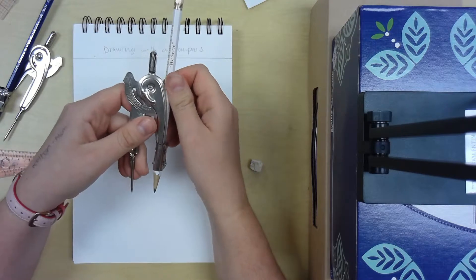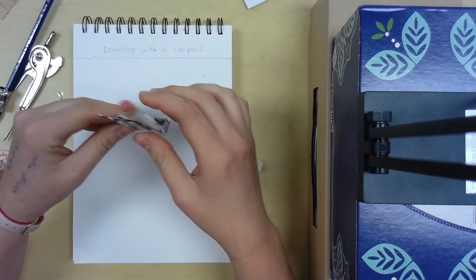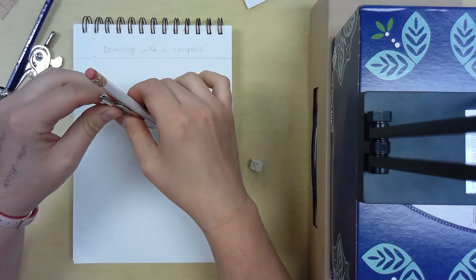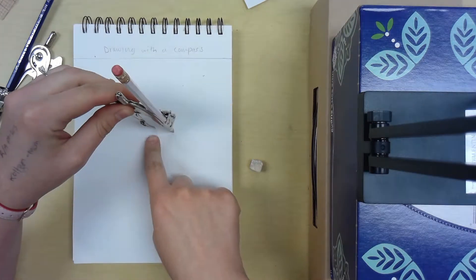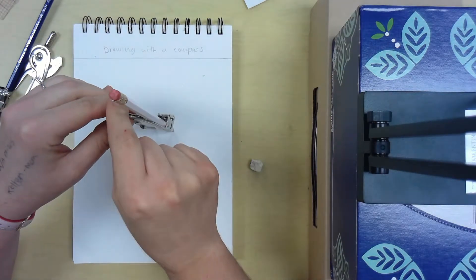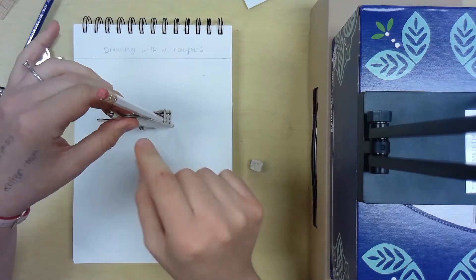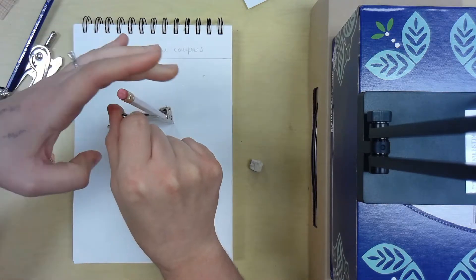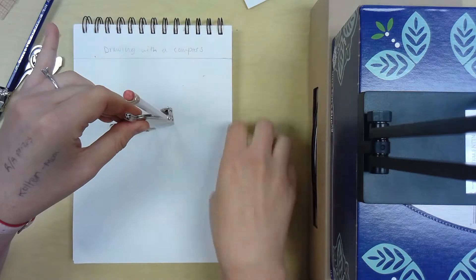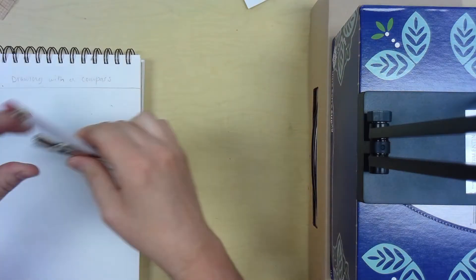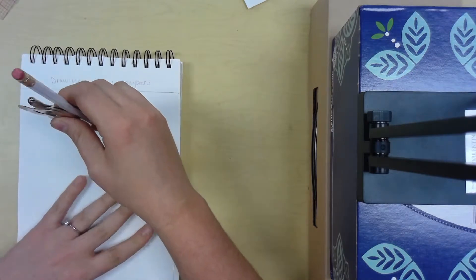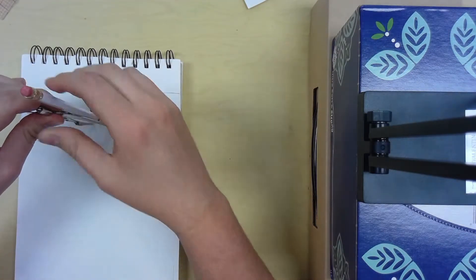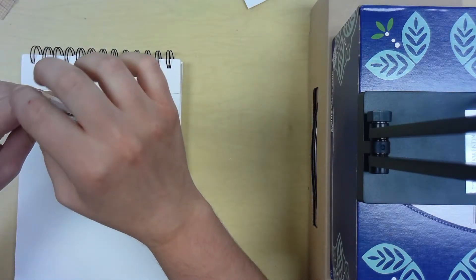What you're going to do is you're going to put the metal side down on your paper, the metal rod. Then what you're going to do, and I'm just going to hold the top, is you're going to spin your paper.